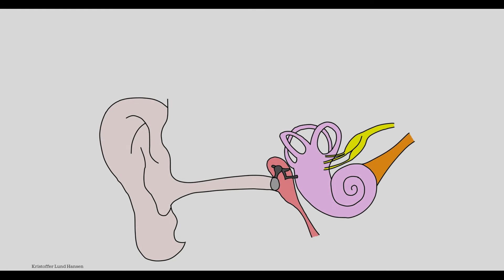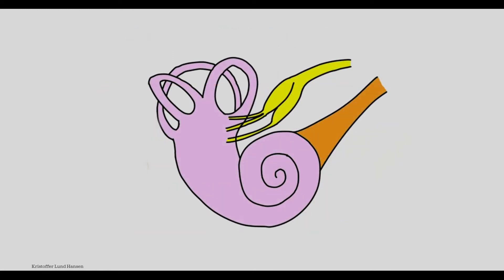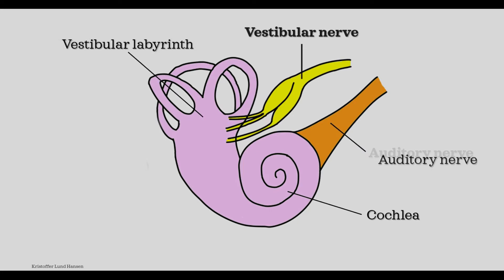Here we can see the outer ear, the middle ear, and the inner ear. But the only important thing in this case is the inner ear. With the inner ear we have a few different main structures: the cochlea — the part of the inner ear involved in hearing — the vestibular labyrinth, the auditory nerve, and the vestibular nerve.